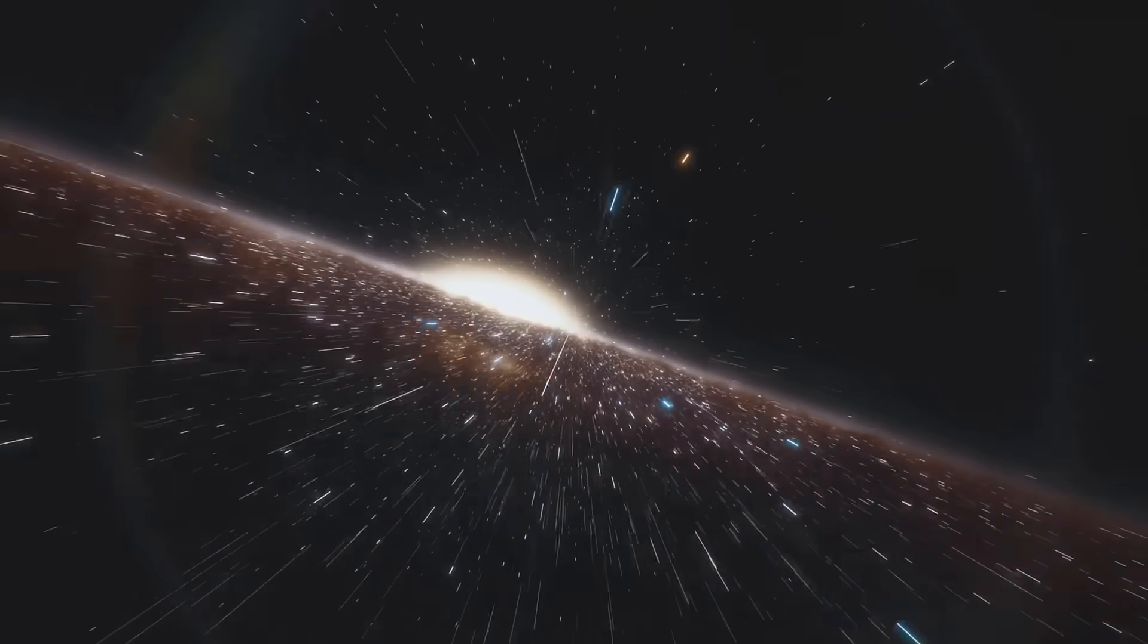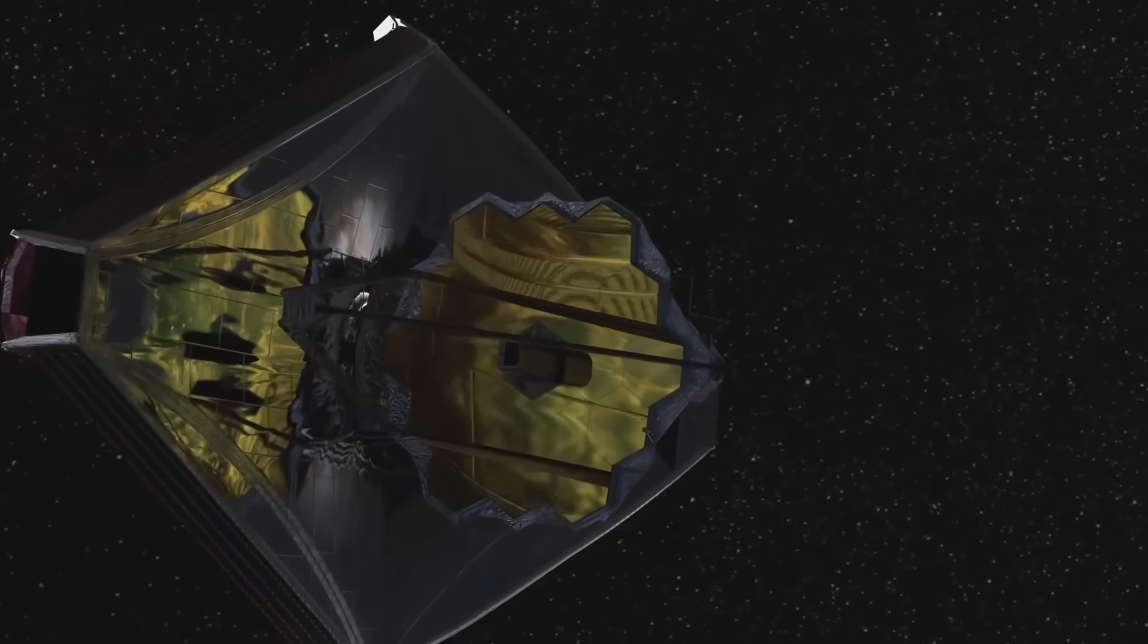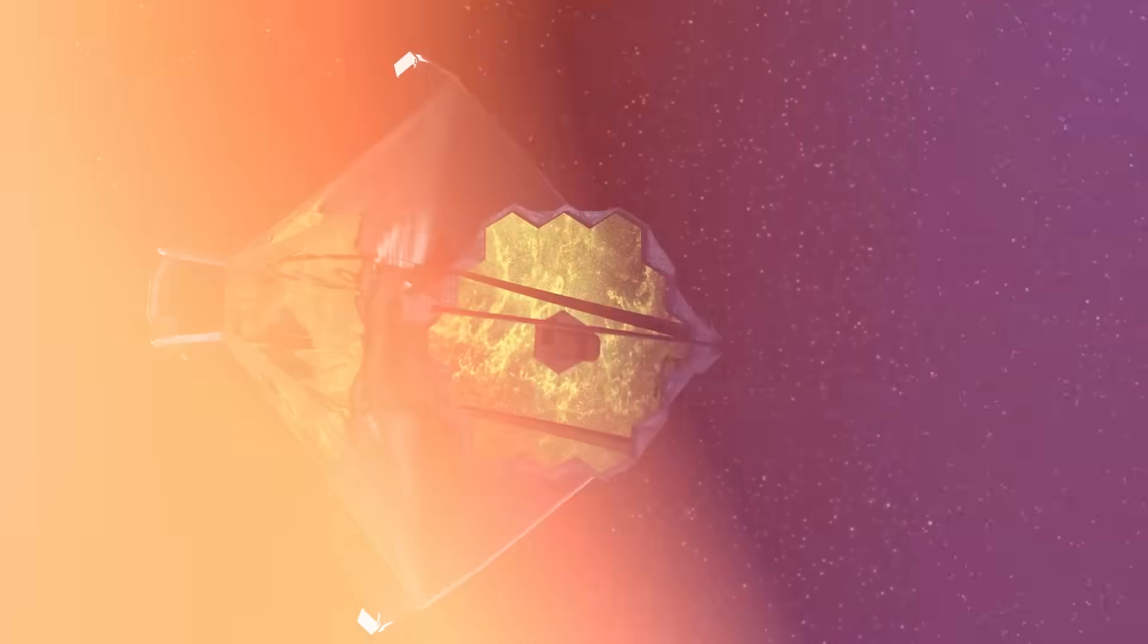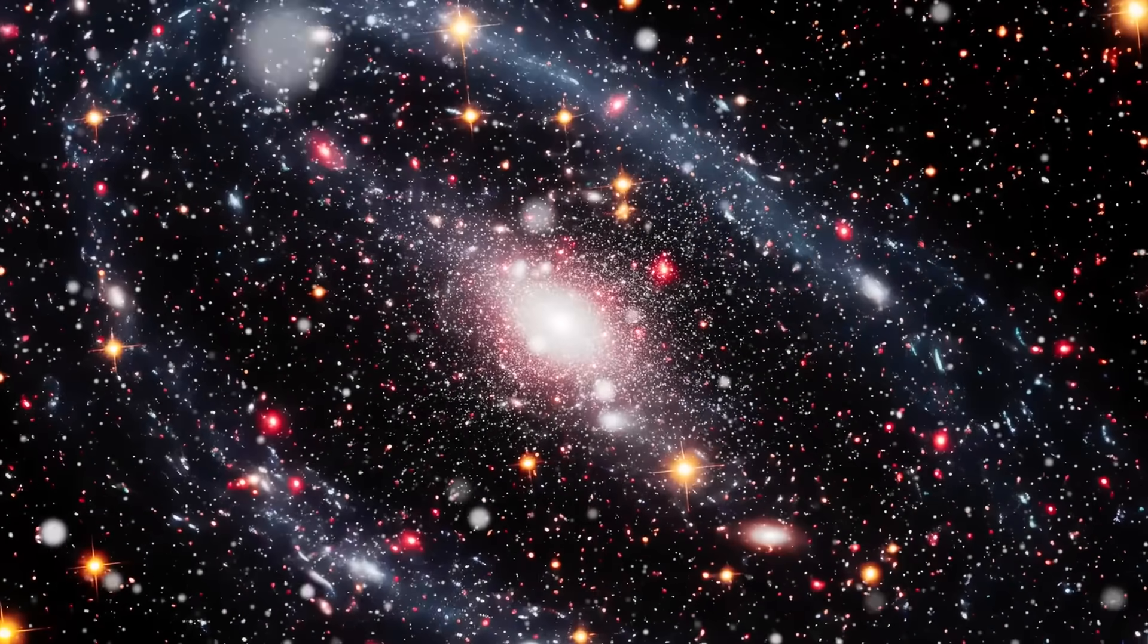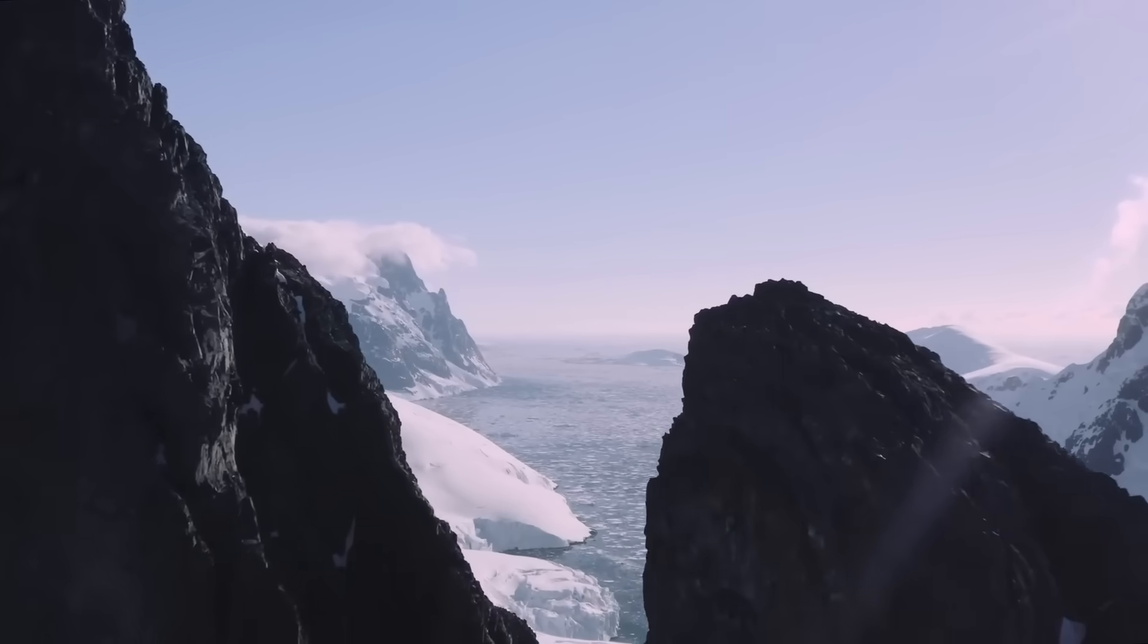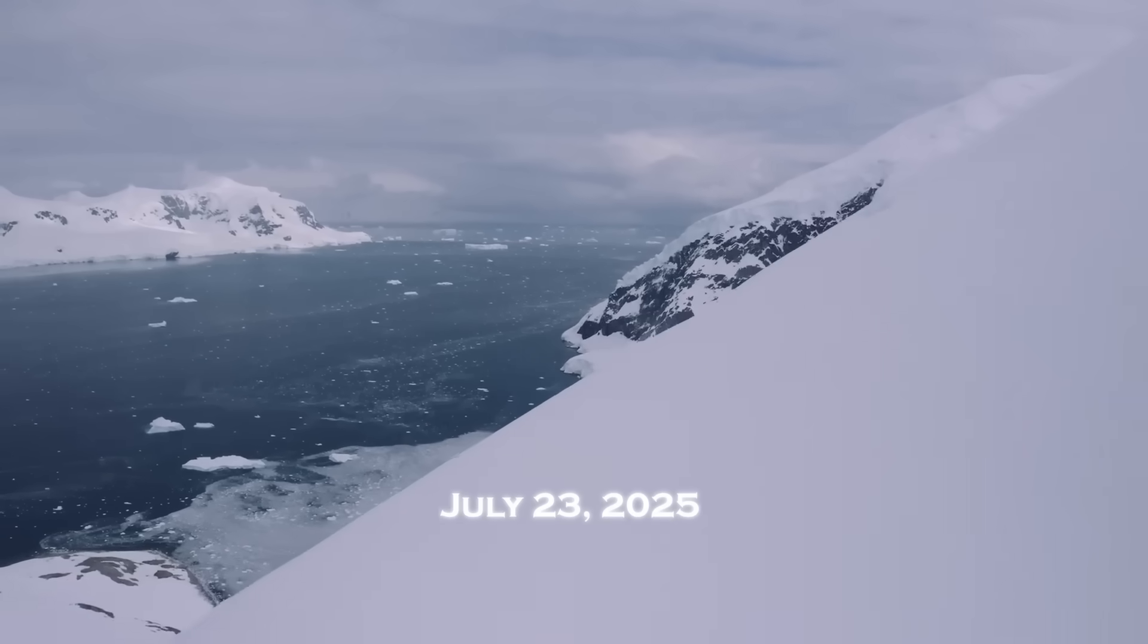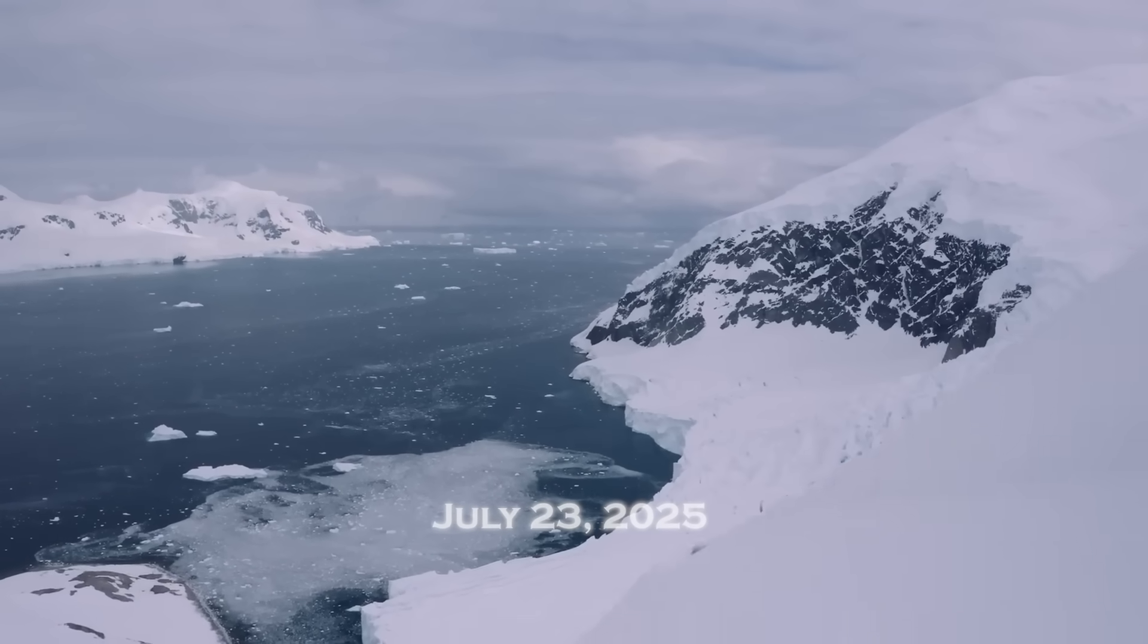Buried deep within the AI's output logs was a set of coordinates. A simple string of numbers. Longitude, latitude, and time. At first glance, it looked like just another anomaly. But when an astronomer ran the numbers through a classical simulation, chills ran through the room. The coordinates pointed not to a location in space, but to a date and place on Earth. Specifically, a remote region in the Arctic Circle. And the date? July 23, 2025. Just weeks away.